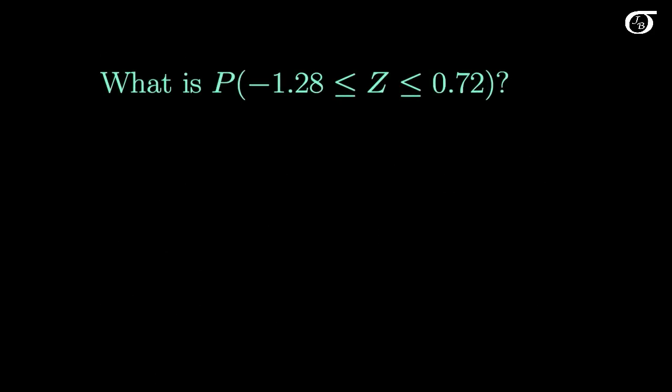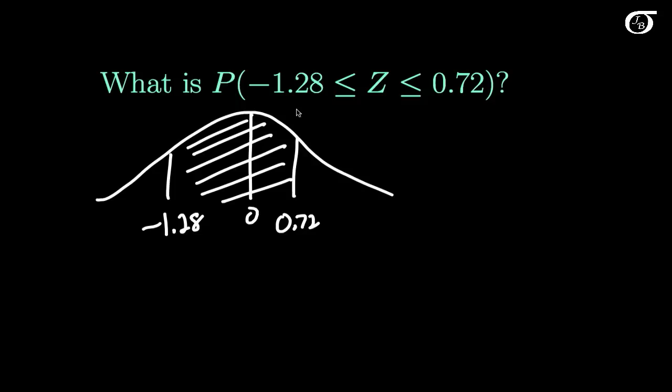What is the probability that Z lies between minus 1.28 and 0.72? Let's draw a picture. Here's 0 in the middle, minus 1.28 is over here somewhere, and 0.72 is around there. We need the area in between these two values. That is the probability. So how are we going to do this?